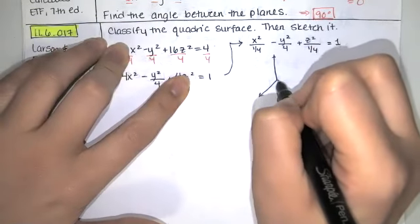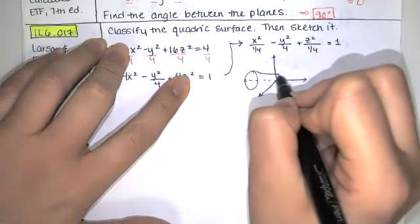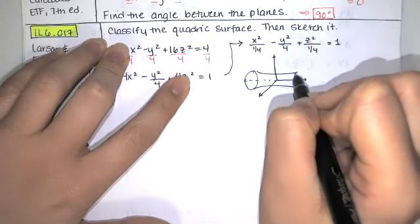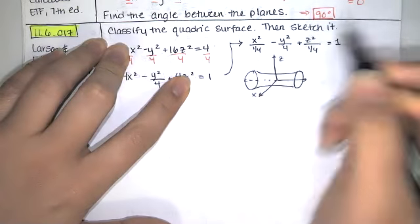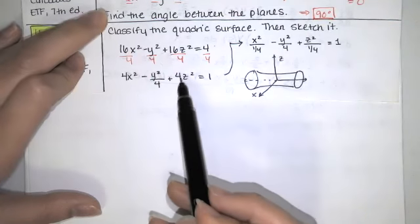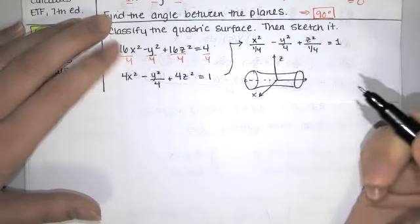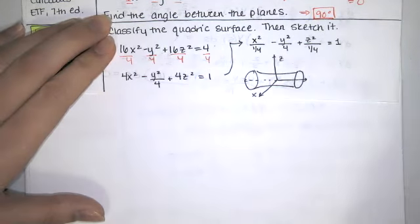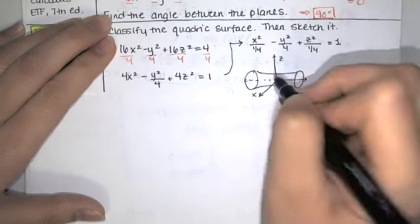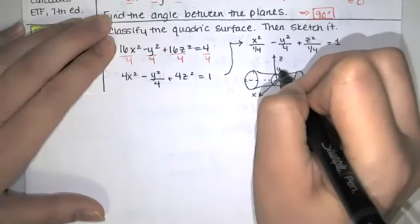So the surface itself is going to look like this. When y is equal to zero, that's in the x-z plane, we have the equation x squared plus z squared equals one, or four x squared plus four z squared equals one, which means x squared plus z squared equals one-fourth. So we've got a circle right here of radius one-half.